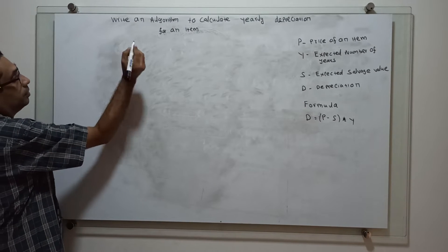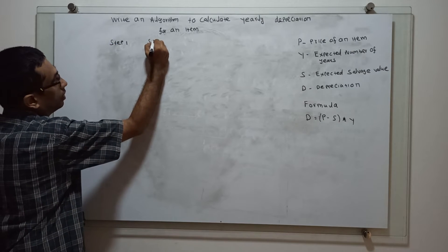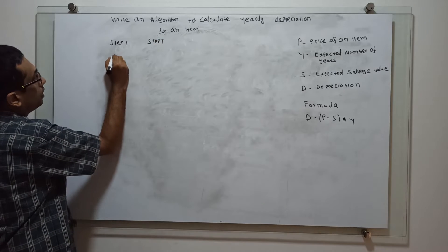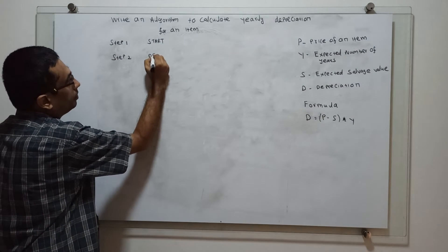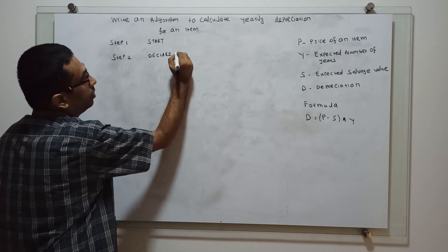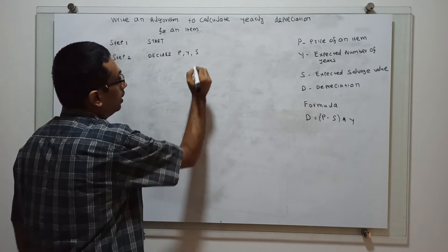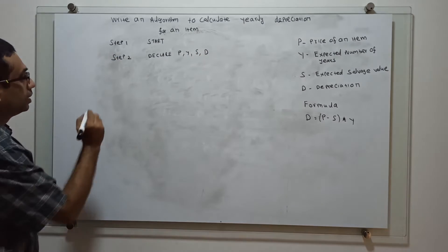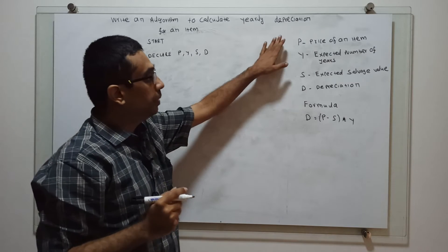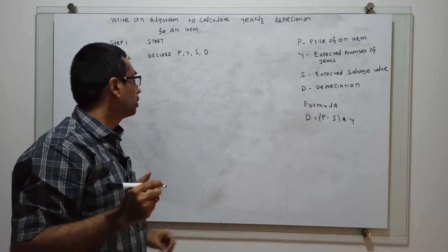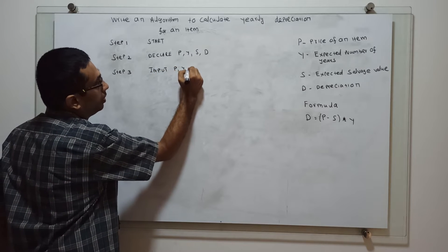First we have to write the algorithm. Step 1 is the logical start of the algorithm. Step 2: we have to declare a variable. We have to obtain an input for P, Y, and S from the user. In short, I am writing: input P, Y, S.